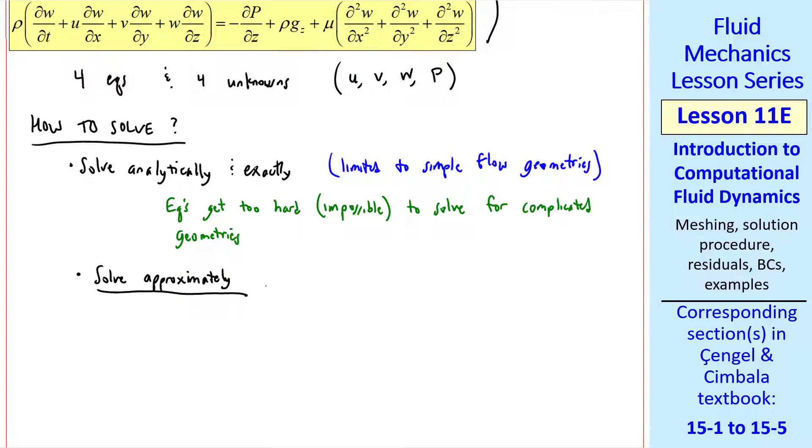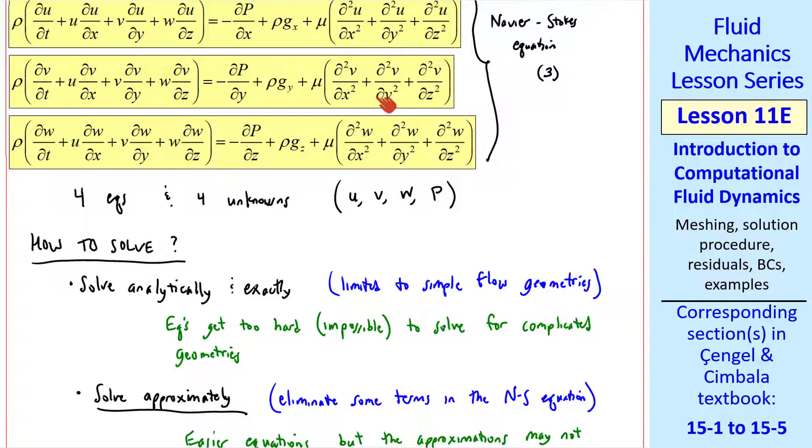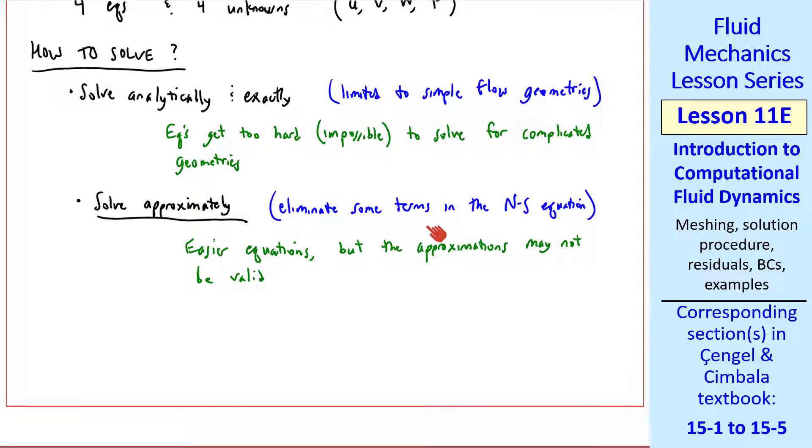We can solve approximately by eliminating some terms in the Navier-Stokes equation. This makes the equations easier, but we have to be careful because the approximations may not be valid. For example, we can ignore the viscous terms in the Navier-Stokes equation, but for flow near walls, this term turns out to be very important. I'll discuss approximate solutions in more detail in the next set of lessons.